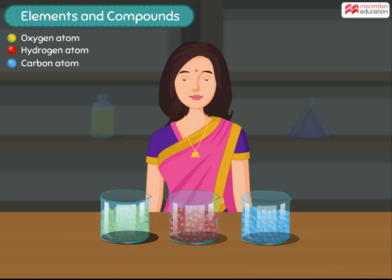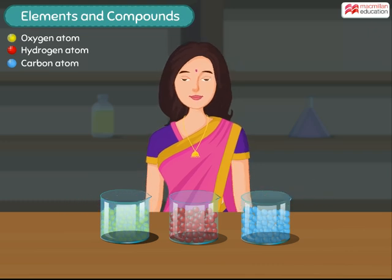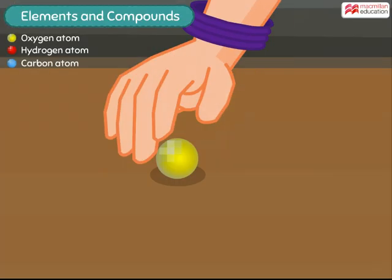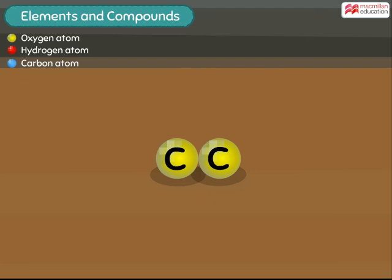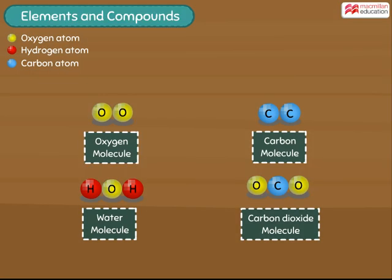This seems interesting — let us continue to make the carbon molecule and the carbon dioxide molecule. One carbon molecule is made up of two carbon atoms, so here is one and two put together, and we have a carbon molecule. The carbon dioxide molecule, on the other hand, is made up of one carbon and two oxygen atoms. Here is one molecule of carbon dioxide. Here are all the molecules we have made so far.